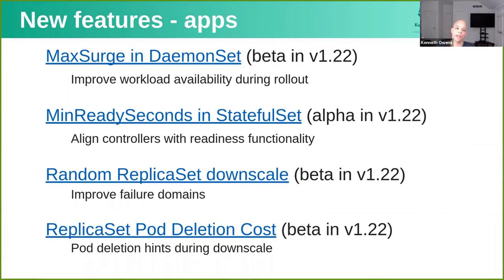Things that we're working on: presently, we're working on max surge in DaemonSets. One of the limitations in DaemonSets right now is that it really tries to optimize to provide a single pod per node during rolling updates. This can somewhat hamper the availability of administrative or infrastructural workloads running on the node. What max surge will allow you to do is to launch a new pod prior to killing the old pod. This adjustment to the rolling update strategy is still going to be very sensitive to spare resources, so that's something you're going to have to manage yourself.